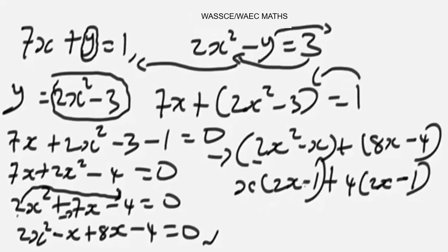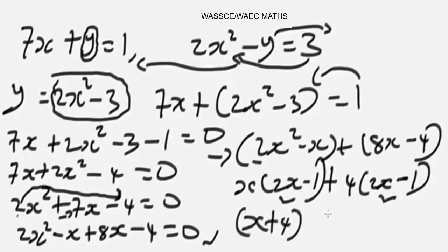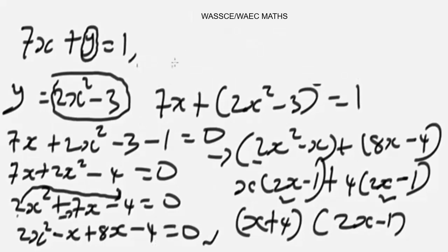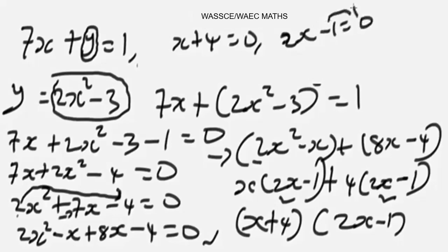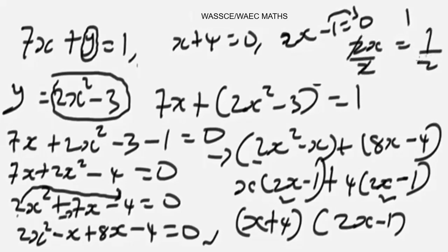Bringing the common factors together: (x + 4)(2x - 1) = 0. We can verify that (2x - 1) appears in both brackets, which confirms it's correct. So our two equations are: x + 4 = 0 and 2x - 1 = 0. Solving: from 2x - 1 = 0, x = 1/2 = 0.5; and from x + 4 = 0, x = -4.